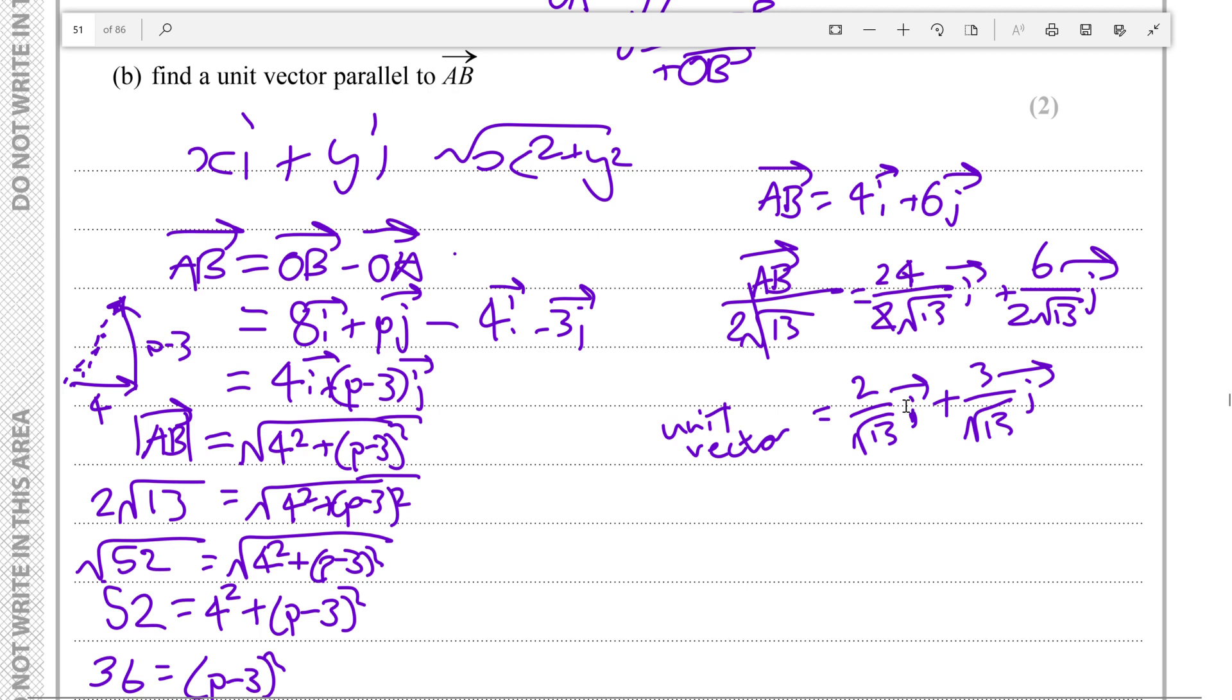This is the unit vector. And to rationalize this fully we don't want a surd on the denominator, so we'll multiply both by root 13 here to get 2 root 13 over 13 i, and we multiply both by root 13 here to get 3 root 13 over 13 j. So what we're doing here is just taking this irrational form with a square root on the bottom and we're turning it into a rational one with square roots only on the top.